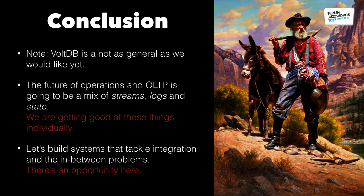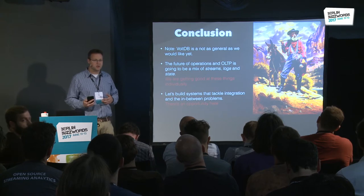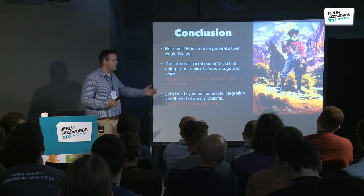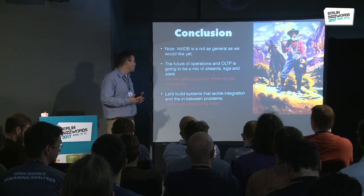My conclusion: we're working on a lot of this stuff at VoltDB, and I know Confluent and ten other companies are working on merging these kinds of things too. None of these systems — VoltDB included — is going to solve every problem or be mature enough yet. It's not that we can't, it's that we haven't yet. There's a lot of opportunity to build systems that don't have to compromise for operations. We can get a lot of the benefits of stream processing and databases in a more integrated way.